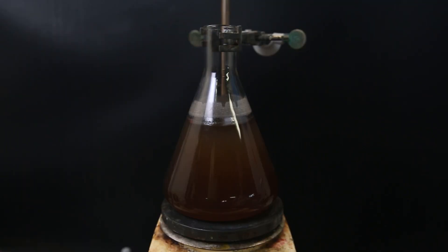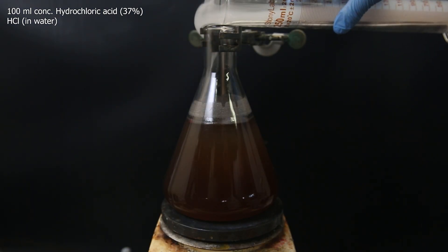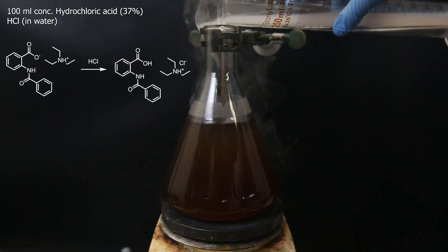When that's done, it looks a bit more cloudy. And now, to precipitate out the product, I add a total of 100 ml of concentrated hydrochloric acid.